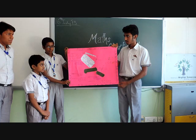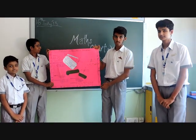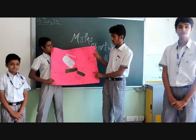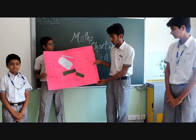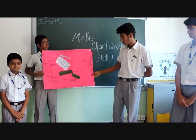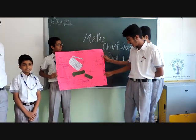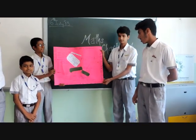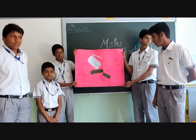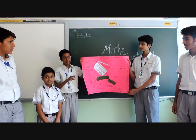The third theorem: if a transversal intersects two parallel lines, then each pair of interior angles on the same side of the transversal is supplementary. Then the lines are parallel to each other. Also, the angle between parallel lines is zero.